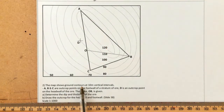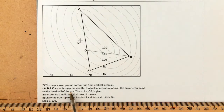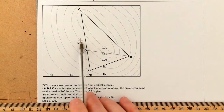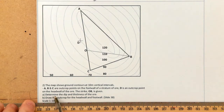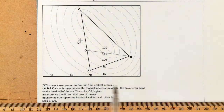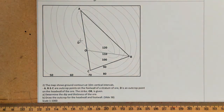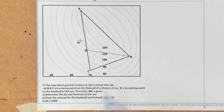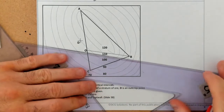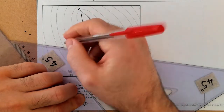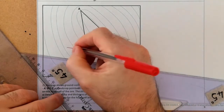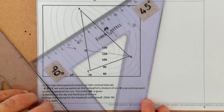For question 2, the map shows ground contours at 10 metre vertical intervals. A, B and C are outcrop points on the footwall of a stratum of ore. D is an outcrop point on the headwall. This time A, B and C are on the footwall, with D on the headwall. We're also given the strike line OB, so we don't need to derive the elevation. The question asks: determine the dip and thickness of the ore, then draw the outcrop for both the headwall and footwall.